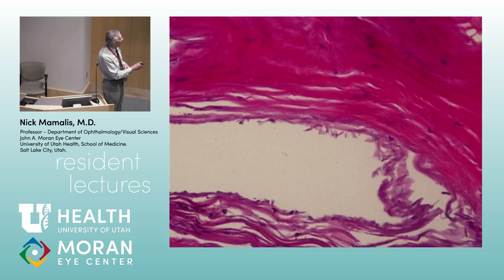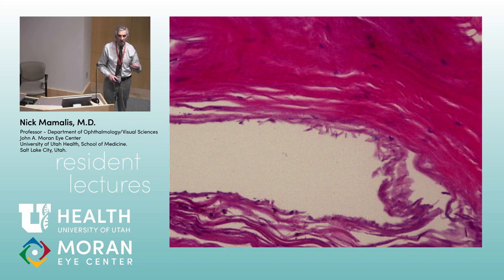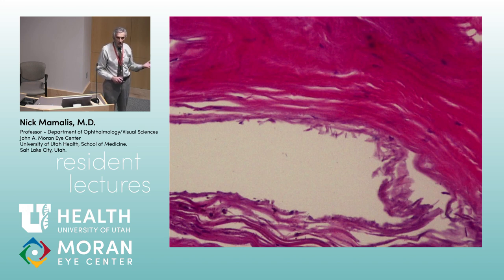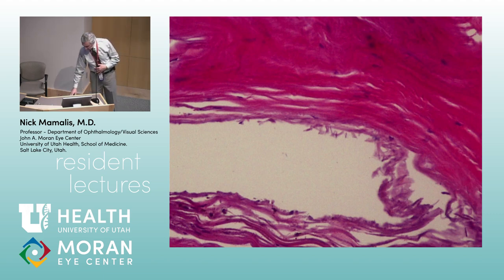Here is the trabecular meshwork, and all of this exfoliative material just clogs it up. Two advantages of doing cataract surgery in these patients: first, when you take out the cataract — especially the anterior capsule — a lot of that exfoliative material leaves with it. Second, when you remove the crystalline lens, which is large, and put in a thinner implant, the angle actually opens. You can get a pressure drop of up to five points in a patient with exfoliation just doing cataract surgery. Even in normal open-angle glaucoma, cataract surgery can give a three-point drop — you can literally treat glaucoma by taking out the crystalline lens.